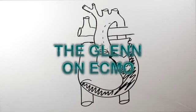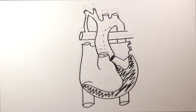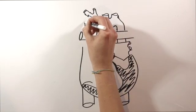In this video, I'm going to talk about the Glenn circulation on ECMO. In the Glenn, the superior vena cava is detached from the heart and attached to the pulmonary artery.